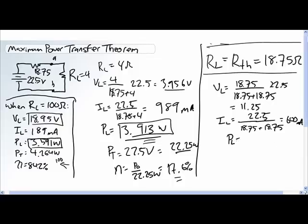Now power to the load is equal to the voltage across the load times the current delivered to the load, 600 milliamps times 11.25 volts. What we get is 6.75 watts, substantially greater than either our 3.913 achieved when it was a 4 ohm resistor and substantially greater than the power to the load when it was a 100 ohm resistor.